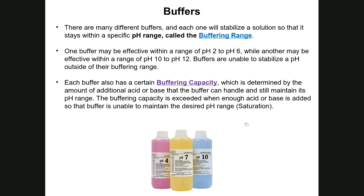In the lab — or as demonstrated on video this time — you would prepare three solutions using stock solutions provided. You'd calculate how much of each stock solution you need to create an unbuffered solution as well as two different buffered solutions. Then you would perform a titration to determine how much acid and base each buffer solution can neutralize while maintaining a certain pH.